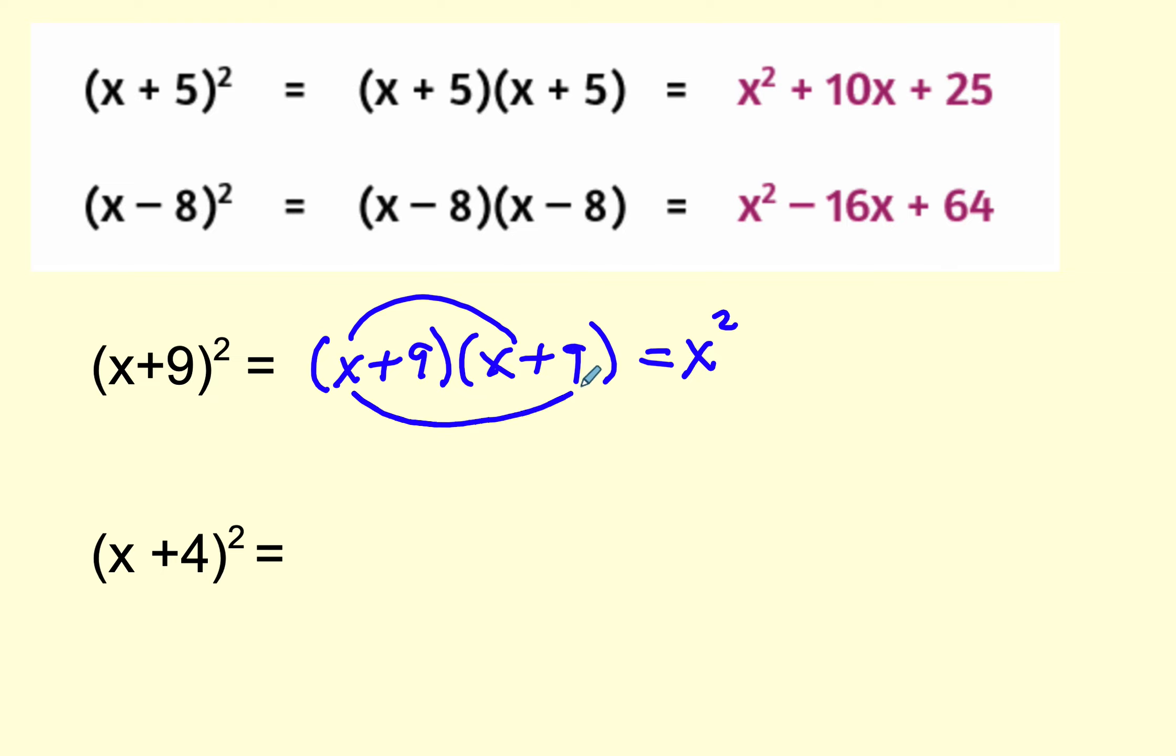I'm going to multiply the outer, which is plus 9x. Then I'm going to multiply the inner, which is plus 9x. Then I'm going to multiply the last, which is plus 81. The two terms in the middle are like terms.